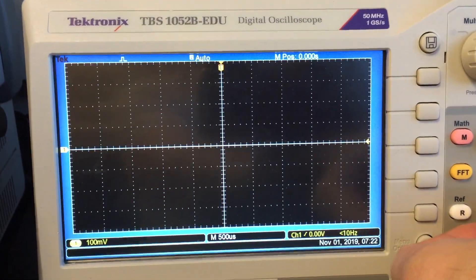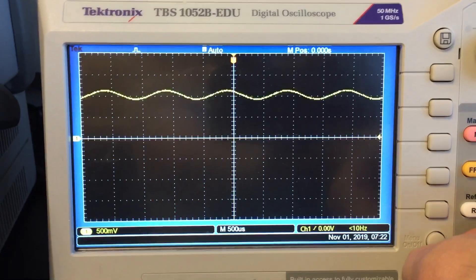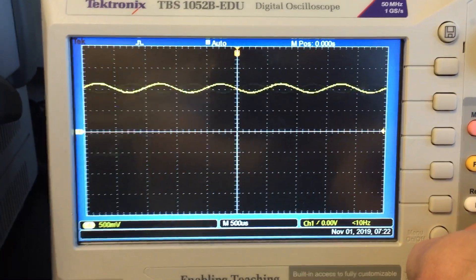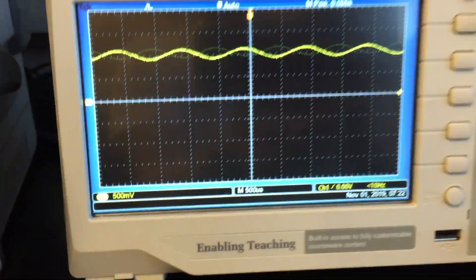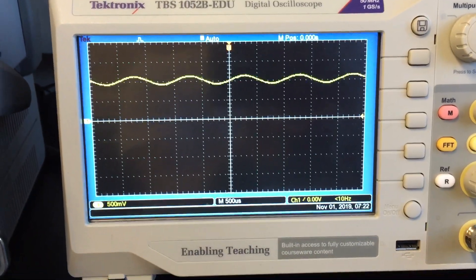So in this situation, the easiest thing to do usually is to change your volts per division until you see your signal. And in this case, around 500 mV we're seeing a signal, and then you can see the sine wave is up there.